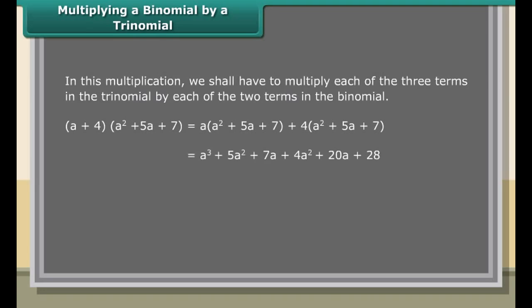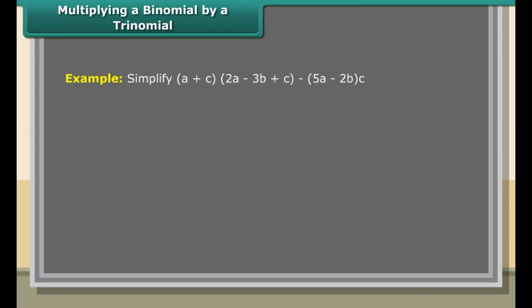Multiplying a binomial by a trinomial: in this multiplication, we multiply each of the three terms in the trinomial by each of the two terms in the binomial. For example, (A + 4)(A² + 5A + 7) equals A(A² + 5A + 7) plus 4(A² + 5A + 7), which equals A³ + 5A² + 7A + 4A² + 20A + 28, which simplifies to A³ + 9A² + 27A + 28.